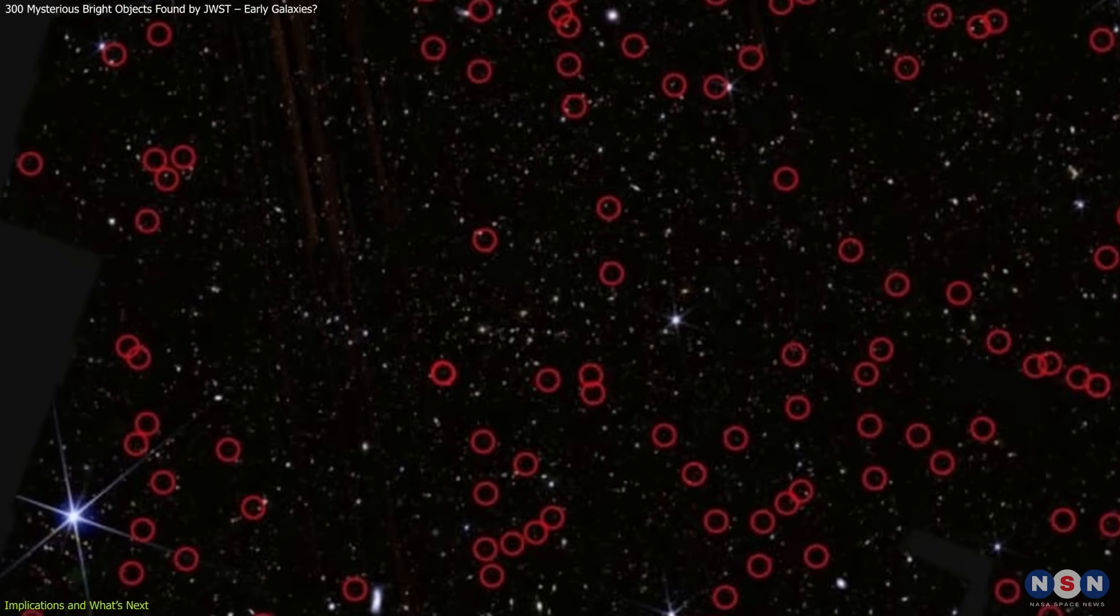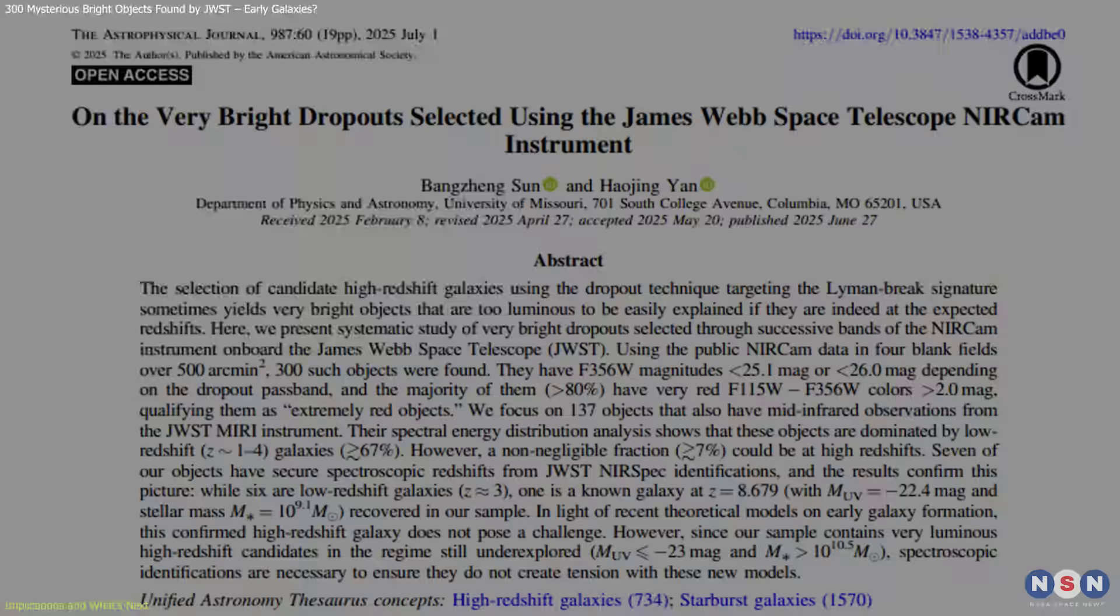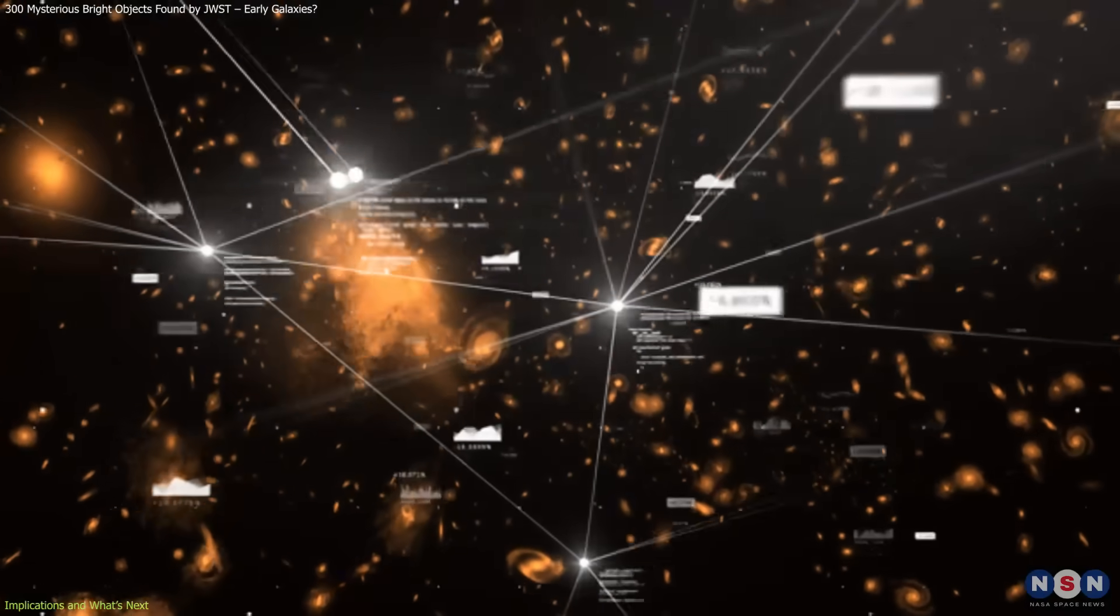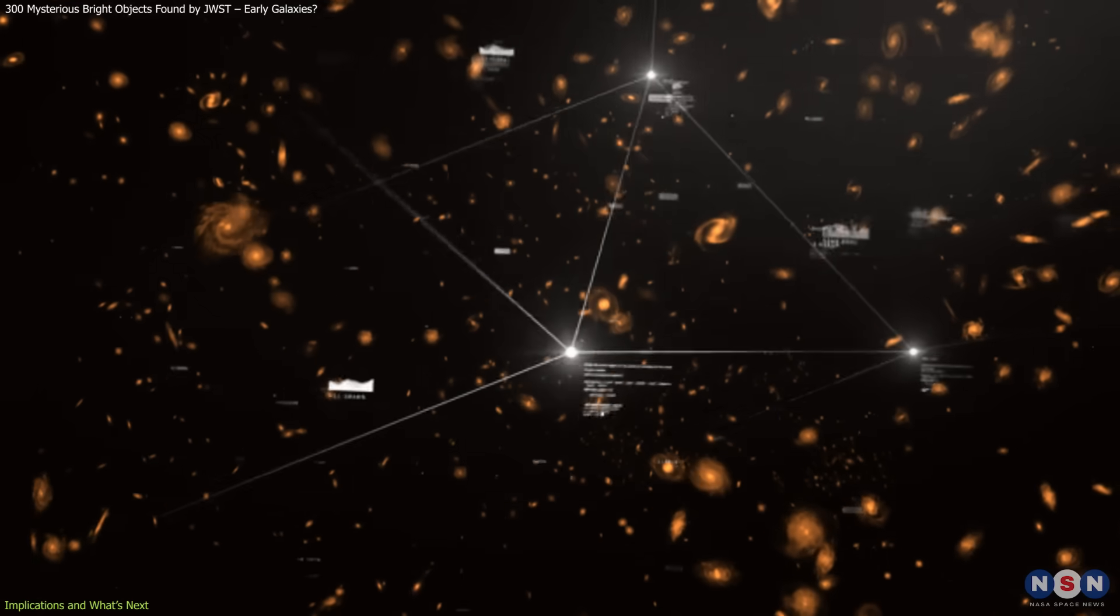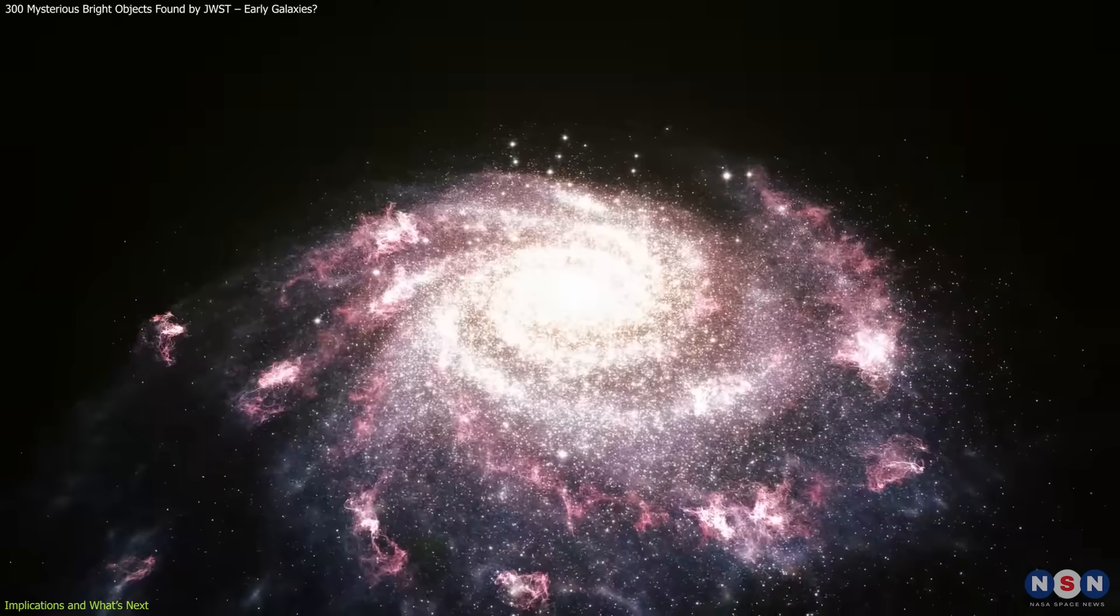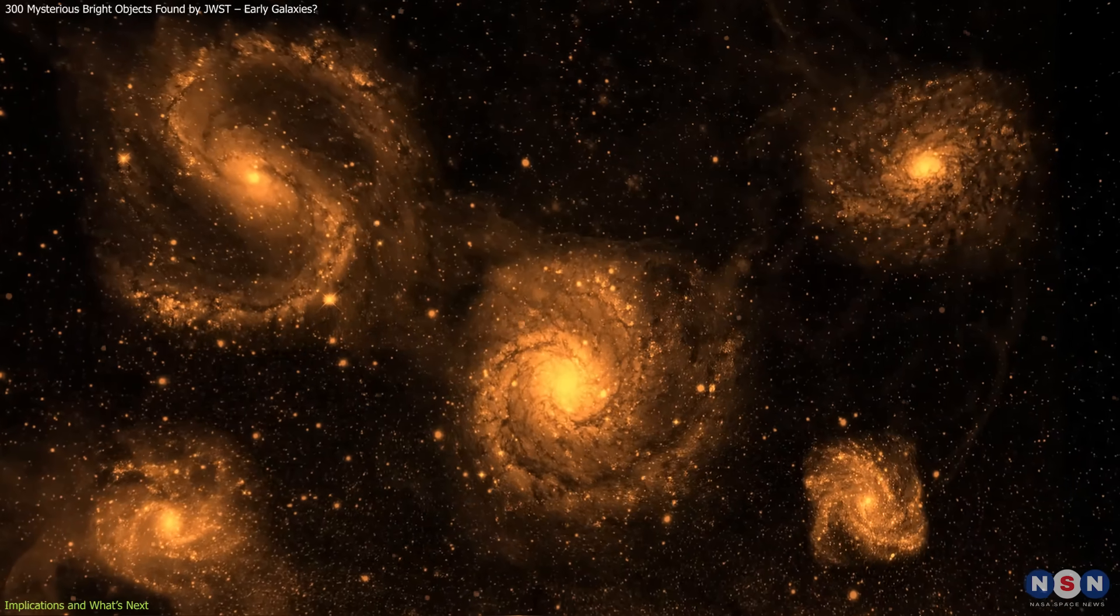On the other hand, if most of these objects are confirmed to be closer galaxies, the study will still provide important benefits. It will refine the methods used to identify high-redshift galaxies, reduce contamination in future surveys, and improve our understanding of dusty starbursts and other lower-redshift phenomena.